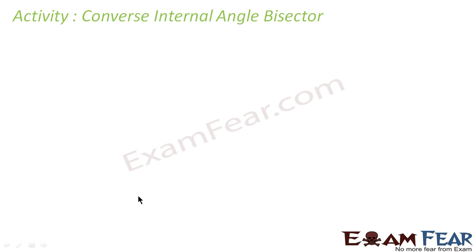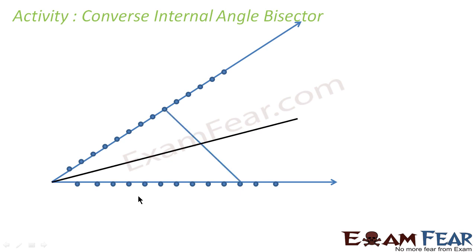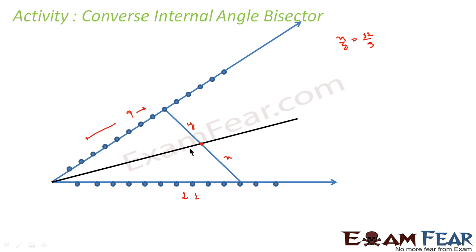Let's do some activity for the converse of the internal bisector theorem. We draw a triangle and mark these points. Here is the drawing — this point which I have drawn, the angle is not equal. So let's suppose this is 1, 2, 3, 4, 5, 6, 7, 8, 9, 10, 11 — this is x and this is y. I found this point such that x by y is equal to 11 by 9. Once I found this point, I drew this line here.